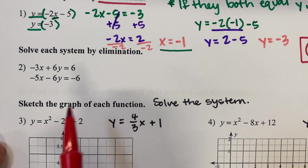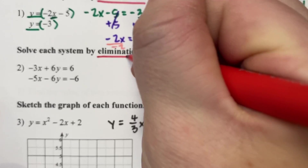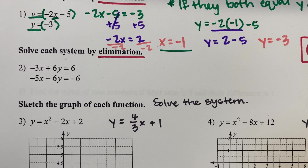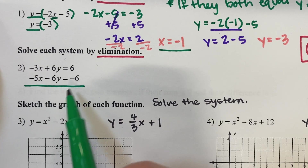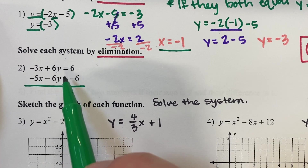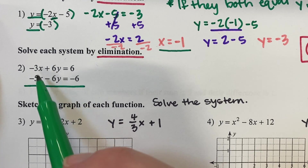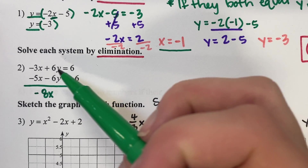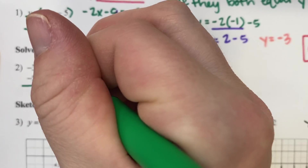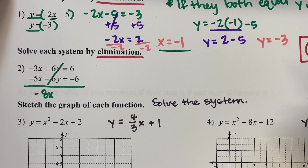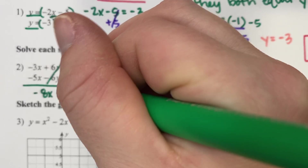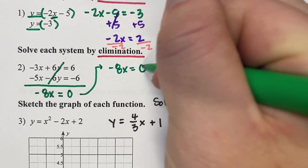The next method is elimination — this is where you're trying to get something to line up that will cancel itself out. We draw a line under the equations. I automatically see a plus 6y and a minus 6y, so I add straight down each column. For x: negative 3x minus 5x gives negative 8x. For y: positive 6y minus 6y eliminates to 0. On the right: 6 minus 6 is 0. So negative 8x equals 0.